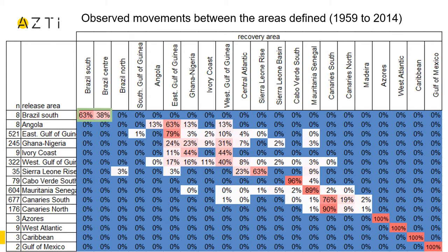The first group is the Brazilian areas, though with quite few recoveries in the historical period. Then the areas within the Gulf of Guinea. The central Atlantic area is more related to the Gulf of Guinea, with some input from the Sierra Leone Rise area, and then western African areas from Sierra Leone to Mauritania. We can notice a high level of residence in each of them, from 63 to 96 percent. And finally, Canary Islands and Madeira, which also connect together.